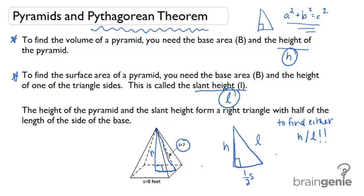To set up Pythagorean Theorem, we would just set up h squared plus one half s squared equals l squared. And again, this will give us a relationship between the slant height and the regular height. We will need that relationship because we may have to solve for one or the other before we can find the volume or surface area.